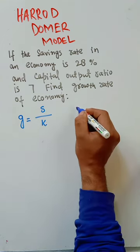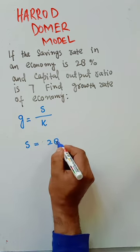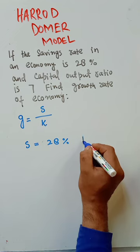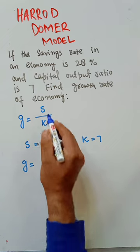Let's denote it by K. Here we are given savings is equal to 28 percent. Capital output ratio is 7. That means the growth rate of economy will be equal to savings, which is 28 percent, divided by seven.